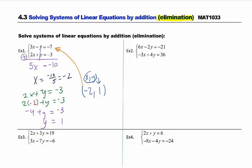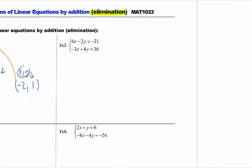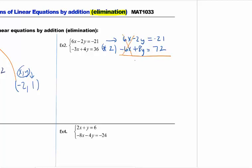Example 1 was straightforward because I didn't have to do anything to get elimination to happen. Looking at Example 2, I will have to do something to get two terms to cancel, because right now if I add them together it doesn't work. I either want the x's or the y's to be opposites — it's a toss-up, your choice. I'm going to multiply and cancel the x's, so I'll multiply the bottom equation by 2. After distributing, I get negative 6x plus 8y equals 72. Now the x terms cancel, and I can add down to get 6y equals 51.